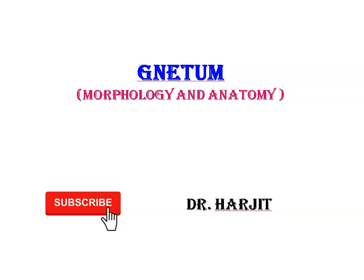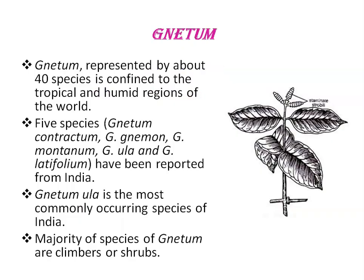Today, we will be discussing morphology and anatomy of Gnetum. Gnetum is a gymnosperm confined to the tropical and humid regions of the world, represented by about 40 different species. Majority of Gnetum species are woody climbers, for example Gnetum ula and Gnetum montanum, except a few shrubs and trees, for example Gnetum gnemon. Gnetum is a sporophytic plant which looks very much like an angiosperm.